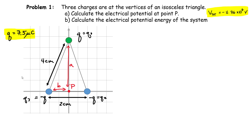The second question asks us to calculate the electrical potential energy of the entire system. To find the total potential energy, you have to consider all the pairs: U1,2 (the interaction between Q1 and Q2), plus U1,3 (between charges 1 and 3), plus U2,3 (the potential energy between the two blue charges).